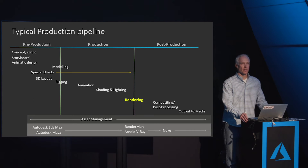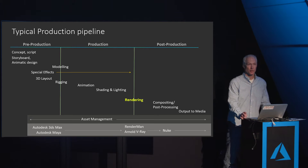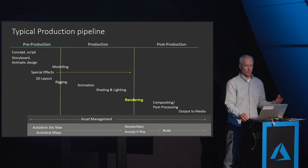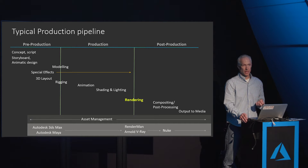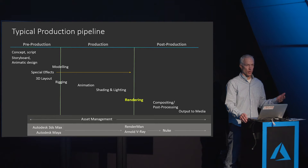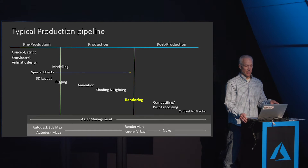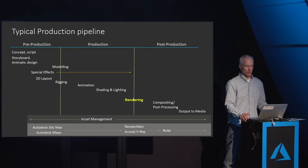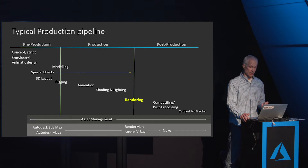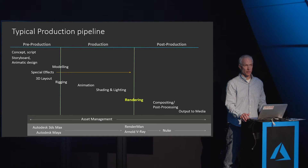This is a simplified typical production pipeline, from pre-production, production, and post-production, showing where rendering fits — between concepts, storyboard, modeling, rigging, animation, and final production — with asset management tools across the span. It also shows specific software like 3ds Max and Autodesk Maya, RenderMan and Arnold, V-Ray — some of the popular rendering engines that we support.